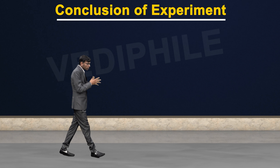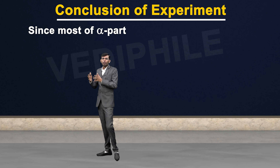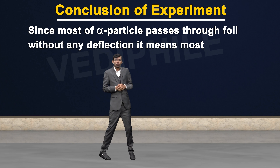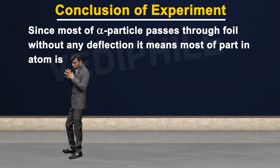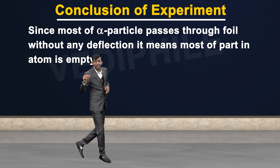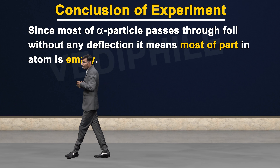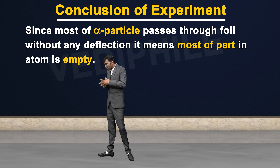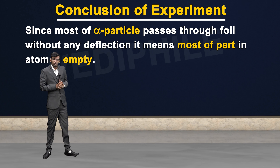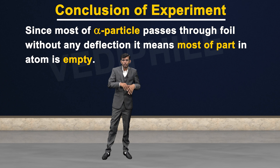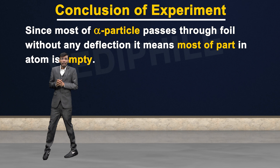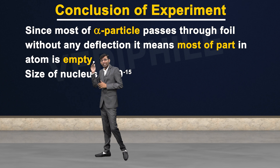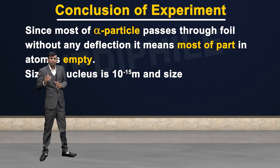The third conclusion: since most of the alpha particles passed through the gold foil without any deflection, it means most of the space — most of the part in the atom — is free space or empty space. Most of the part is empty, that is why the alpha particles went straight through. So Rutherford's conclusion was that most of the space in an atom is basically empty.